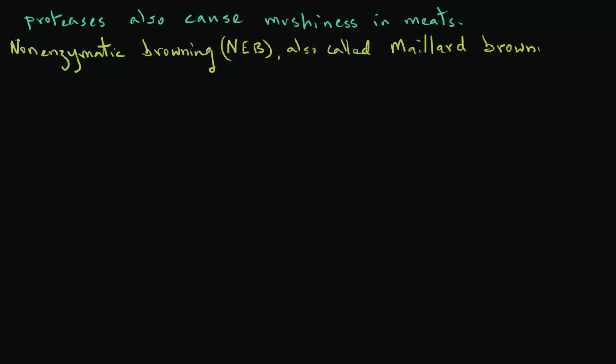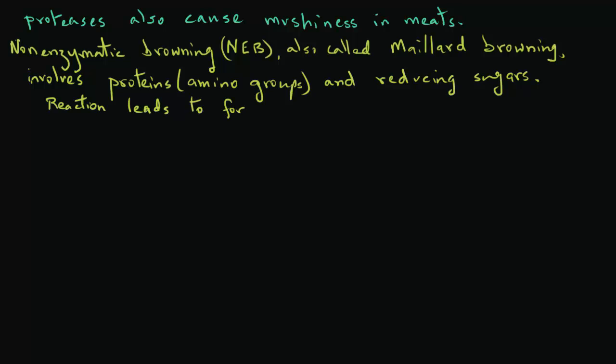Non-enzymatic browning is also called Maillard browning. This involves proteins, some of the amino groups, and the reducing sugars. The reaction has several steps. However, they ultimately lead to the formation of volatiles and dark pigments. It can also bring about changes in the texture and loss in nutritional value.